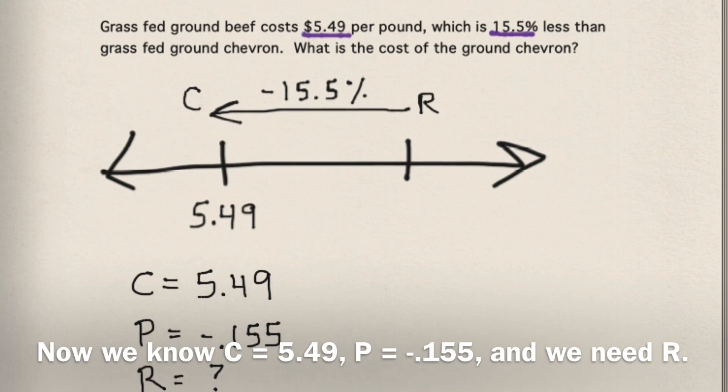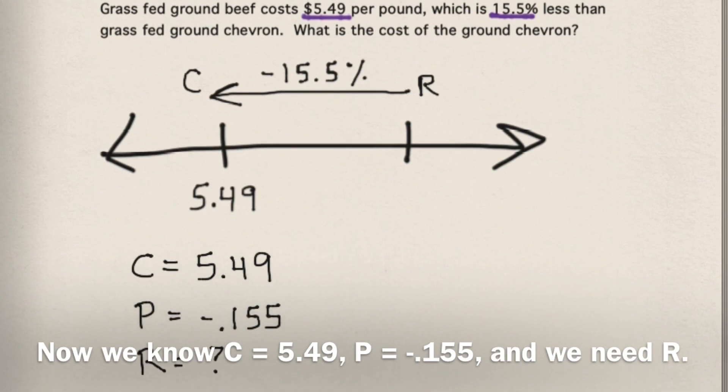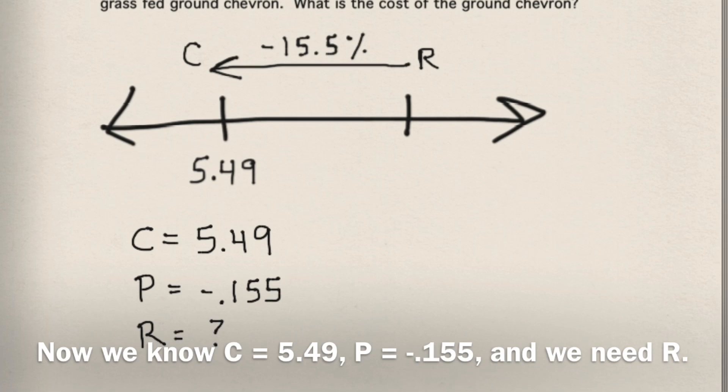Now we know c equals 5.49, p equals negative .155, and we need r.